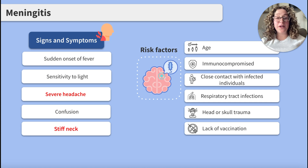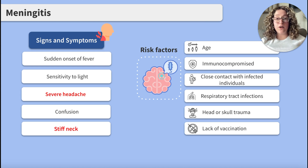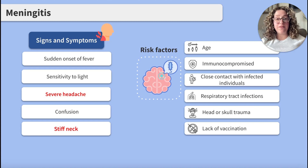Clients who are immunocompromised are more susceptible to infections. Some meningitis-causing pathogens can spread through close contact with infected individuals. Respiratory tract infections caused by bacteria or viruses can lead to secondary meningitis. Trauma to the skull or head can create pathways for pathogens to enter the central nervous system. And not receiving recommended vaccinations increases the risk of meningitis.